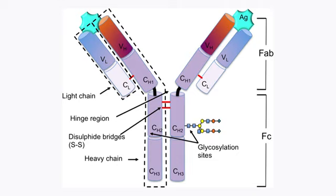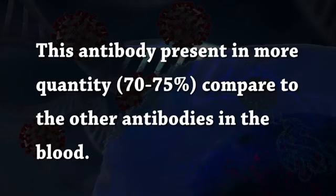Immunoglobulin IgG is one of the essential antibodies which can transfer from the placenta to the newborn baby. This antibody is present in the greatest quantity — about 70 to 75 percent — compared to other antibodies in the blood. IgG consists of four subclasses: IgG1, IgG2, IgG3, and IgG4. Because of its abundance, IgG plays its main role in the humoral immune response.